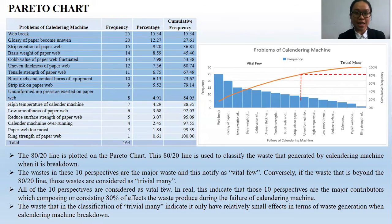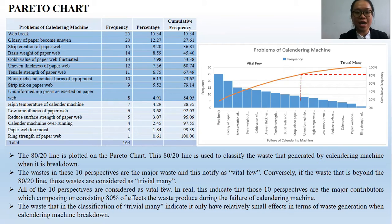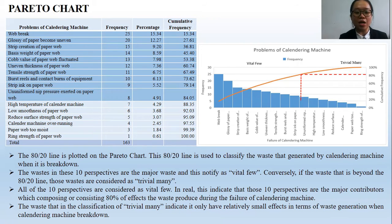The second analysis tool is the Pareto chart. Based on the table, two different colors are used to indicate vital few and trivial many. The vital few problems of the calendering machine are indicated in dark blue color, whereas the trivial many are indicated in light blue. The 80/20 rule is applied on the Pareto chart to classify waste generated by the calendering machine. The vital few are the major contributors of waste generation during calendering machine failure, while the trivial many have relatively small effects.